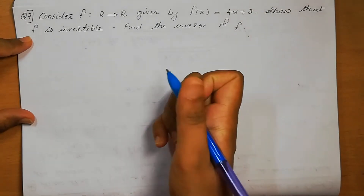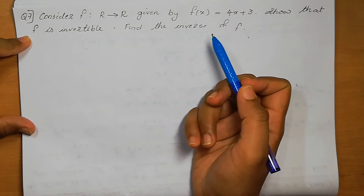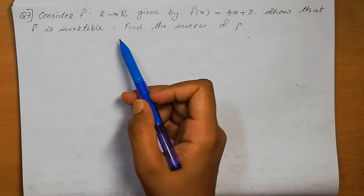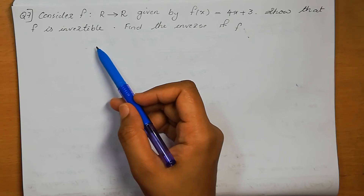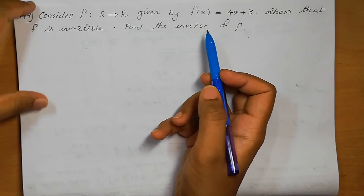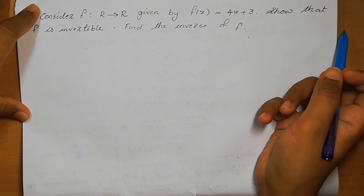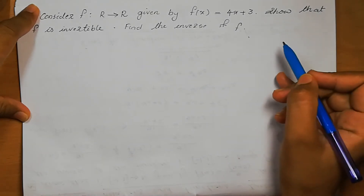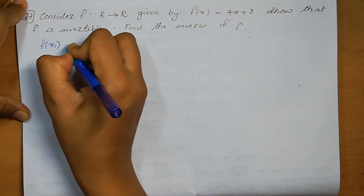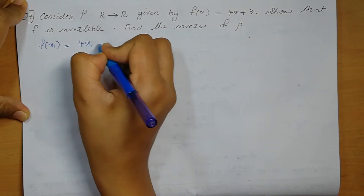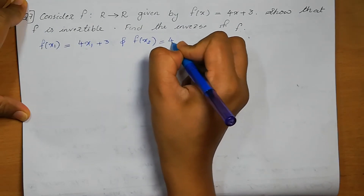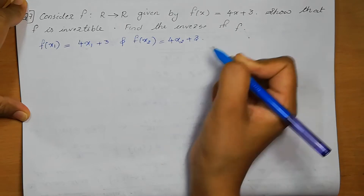Question number 7. Consider f: ℝ → ℝ given by f(x) = 4x + 3. Show that f is invertible and find the inverse of f. F is invertible means first we need to show the function is 1-to-1 and onto. So f(x1) = 4x1 + 3 and f(x2) = 4x2 + 3.